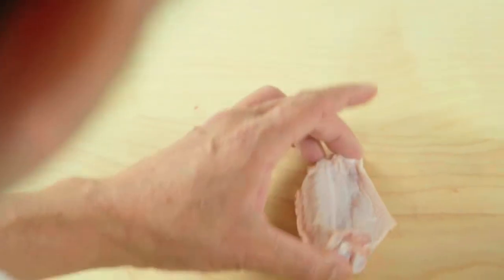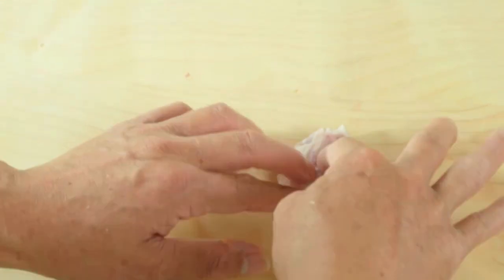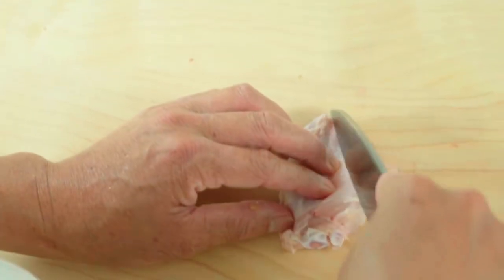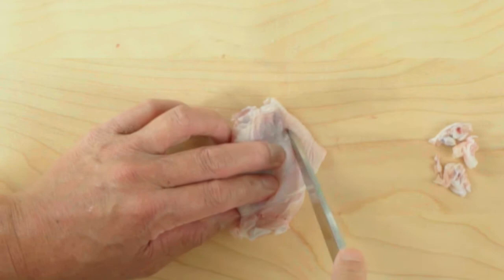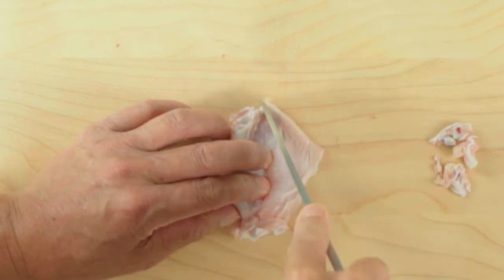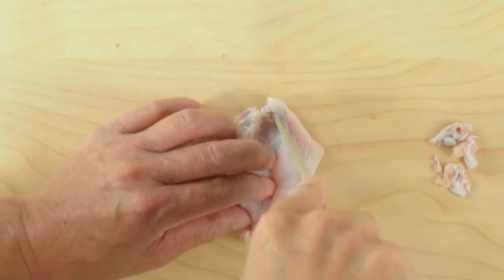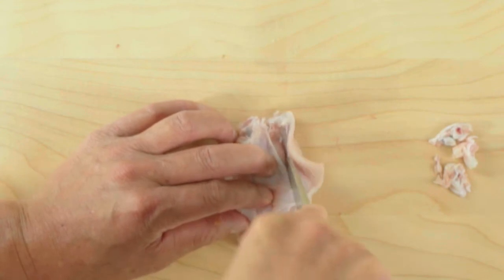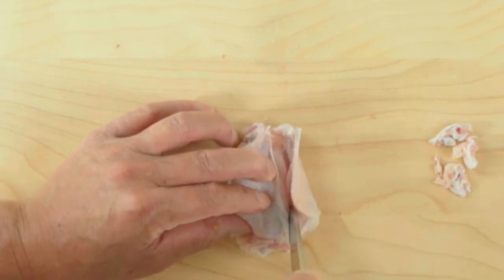Feel with your fingers as to where the bone is on the right side and then cut along the left side of the bone. Hold the knife vertically and cut it open.